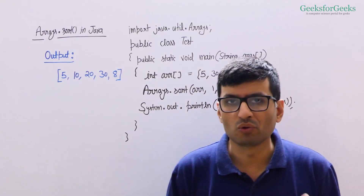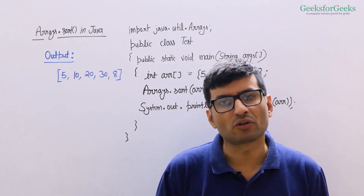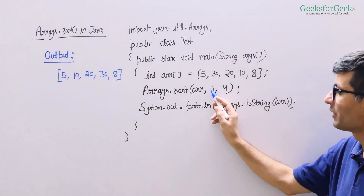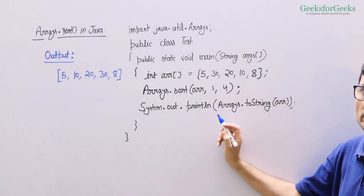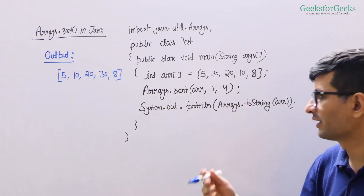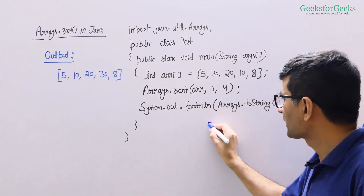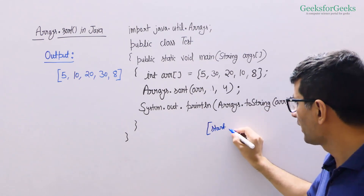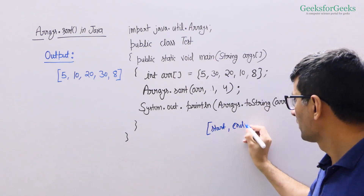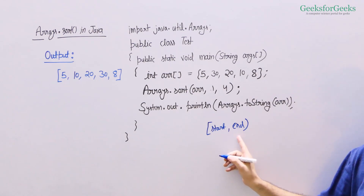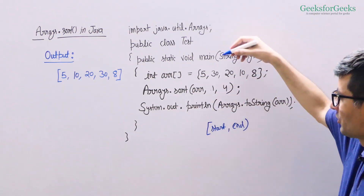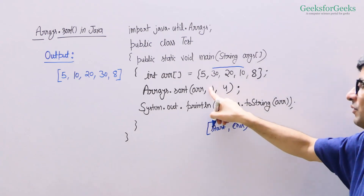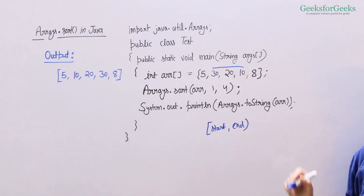Arrays.sort has another version where you can sort a sub-array of the given array. This version receives two parameters: a start index and an end index. The start index is included for sorting and the end index is not included, so it sorts from start to end minus one. In this example, passing indices 1 and 4 means elements at indices 1, 2, and 3 are sorted.